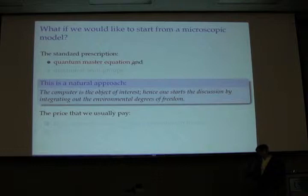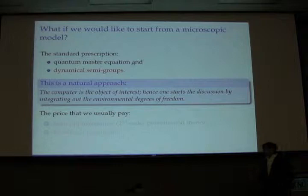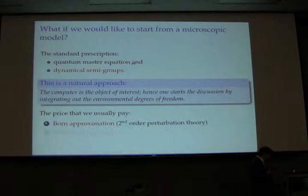What if we would like to start from a microscopic Hamiltonian for your computer? The standard prescription is to use the quantum master equation and dynamical semi-groups. This is definitely a very natural approach — you're not interested in the environment, so you trace it out and follow the evolution of the computer. But you pay a price: the Born-Markov approximation. You first need to do the Born approximation, which is second-order perturbation theory, and then apply the Markov assumption.